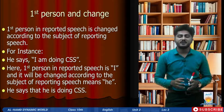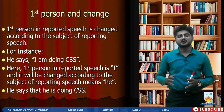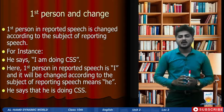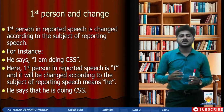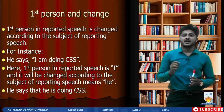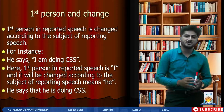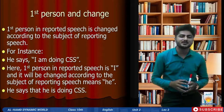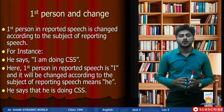For instance: 'He says, I am doing CSS.' In this sentence, 'he says' is the reporting speech and its subject is 'he.' 'I am doing CSS' is the reported speech, and the pronoun used is first person — 'I.' When we make indirect speech, it becomes: 'He says that he is doing CSS.' You may look at the slides — 'I' has been changed into 'he' because of the subject of reporting speech.